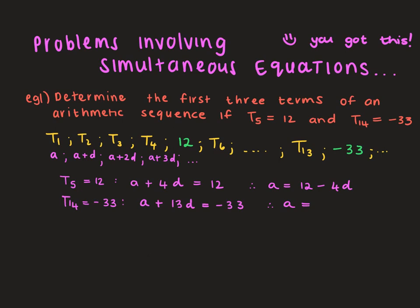Making A the subject of the formula: A equals negative 33 minus 13D. We've now created two equations, which means we can solve simultaneously. Letting equation 1 equal equation 2: 12 minus 4D equals negative 33 minus 13D. Solving for D: 9D equals negative 45.